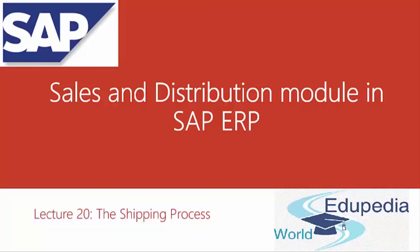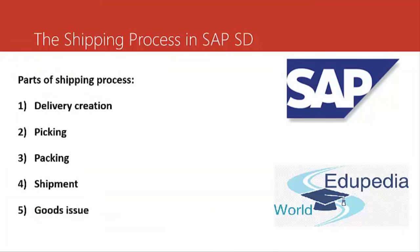Shipping is a part of the order fulfillment process. It starts with the creation of a delivery document, which can be created with or without reference to a previous sales document. The typical process consists of delivery document creation, followed by picking, packing, shipment, and goods issue.